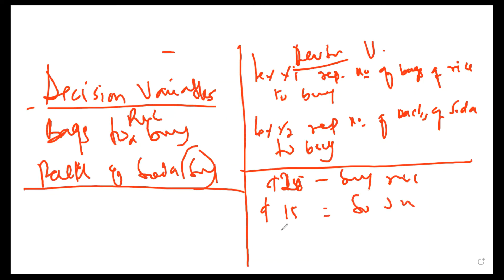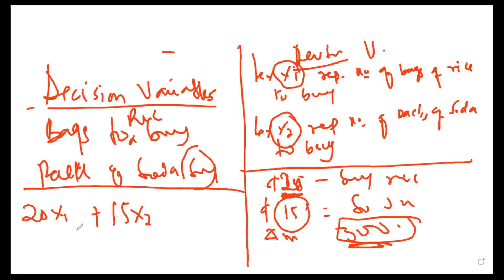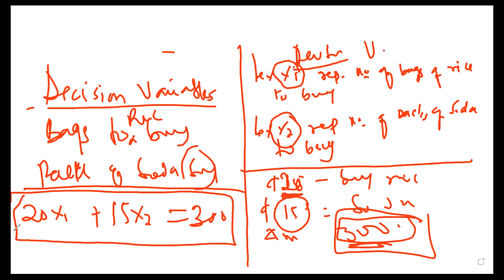I have 300 cedis to spend. To exhaust this total amount, I multiply the unit cost of a bag of rice by the unknown number of bags to buy — giving me 20x1 — plus the unit cost of the pack of soda times the unknown number of soda packs, giving 15x2. The total of these two should be equal to the amount of money in my wallet. Since we are told to spend all the money, this gives us: 20x1 + 15x2 = 300. I have now represented the whole problem in the form of a mathematical equation.